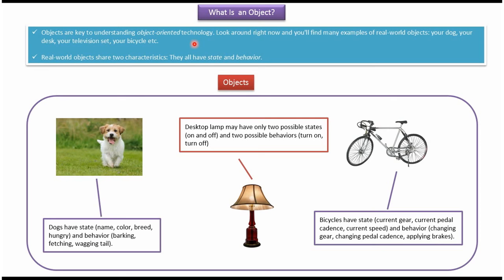Like your dog, your desk, your television set, your bicycle, your fan, etc. Real world objects share two characteristics. The first one is state and the second one is behavior.